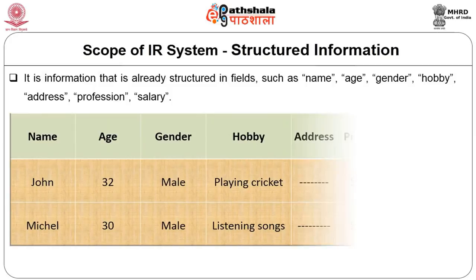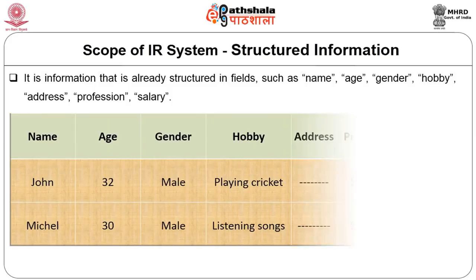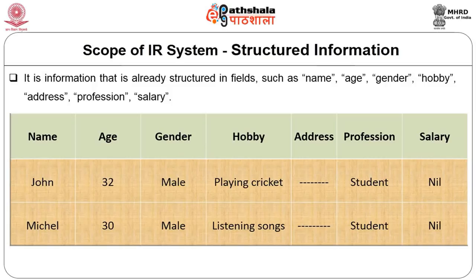Once it is structured by fields such as name, age, gender, hobby and address, if somebody asks a question about the hobby of a person, say John or Michael, it is very easy to retrieve because the name Michael is entered in the name field and the hobby is entered in the hobby field. It is a matter of matching these to retrieve the information. Since the work has already been done for structuring and populating the information within databases, it makes the work of IRS much simpler to retrieve precise information.